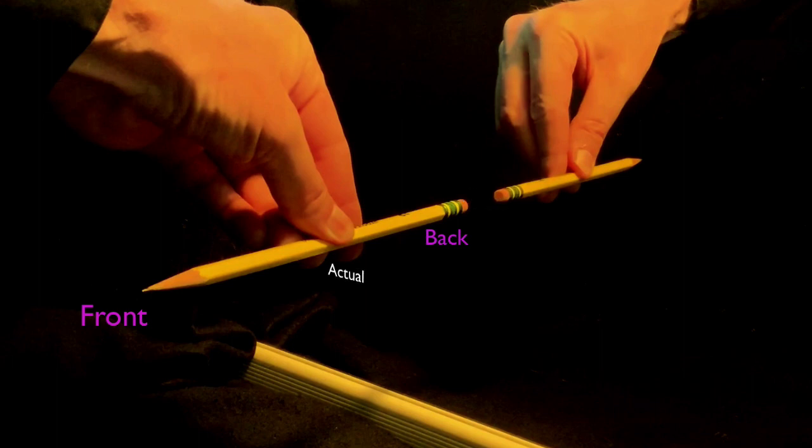But here's the thing. You're looking at the actual pencil from its front. Look carefully to the mirror image, and you'll see that you're looking at it from behind. What's happening here is that the front-back axis is flipped. We're very used to a world where we see things from the front.